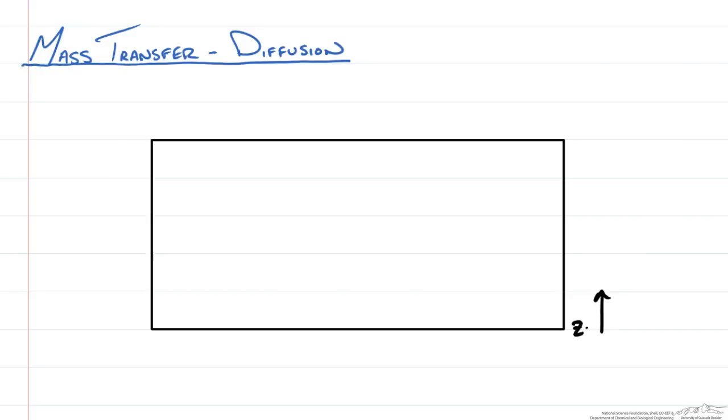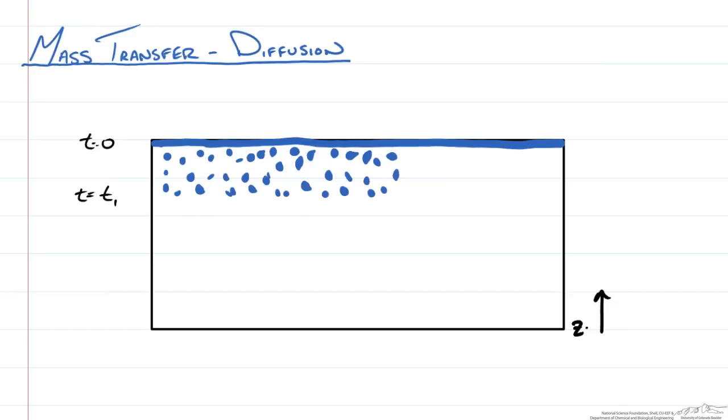Now let's say at some time 0 we drop in some other species, some other liquid, and it covers the surface of our tank. At some later time we have noticed that a lot of these particles of this other species has diffused down in our container. At a later time t2 we see that particles have moved further down in the tank, but not maybe as many.